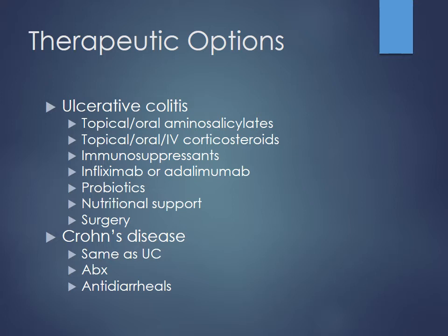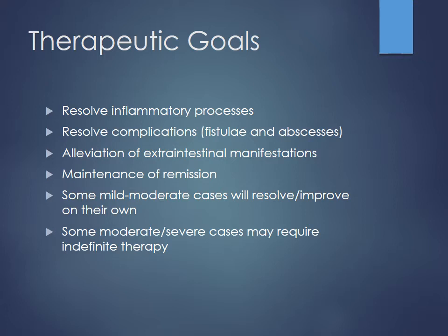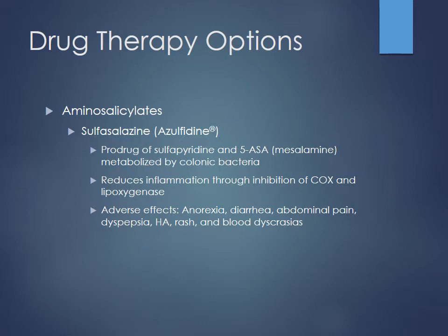With Crohn's disease you might also see some use of antibiotics for small intestine bacterial overgrowth, and potentially antidiarrheals. The goals are to resolve the inflammatory process, resolve complications like fistulas or abscesses, and alleviate extra-intestinal manifestations. Mild to moderate disease may have some self-resolution without intervention, but for more moderate to severe cases, patients may require indefinite therapy — some just for flare-ups, others potentially for life depending on severity.